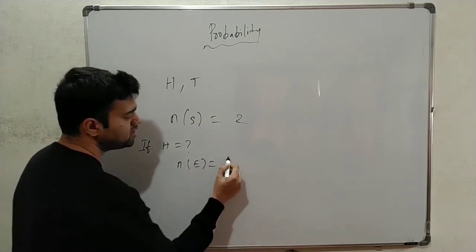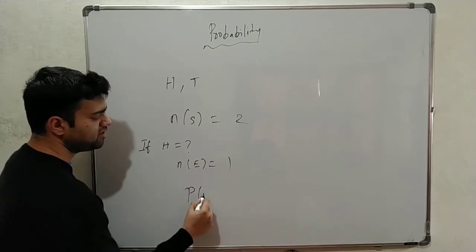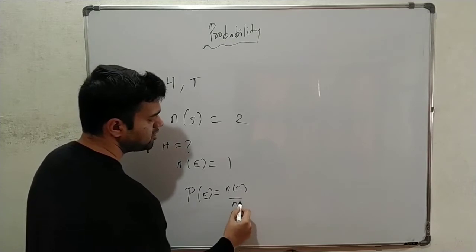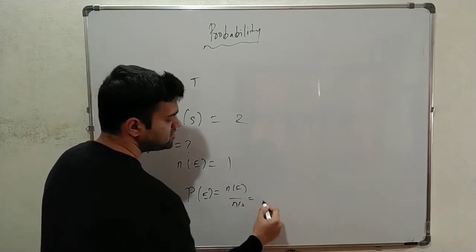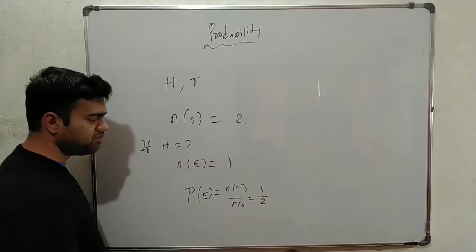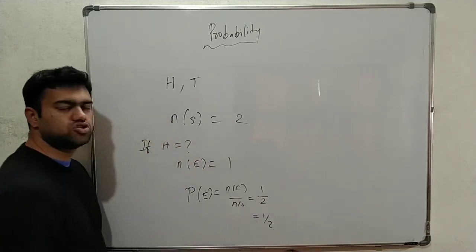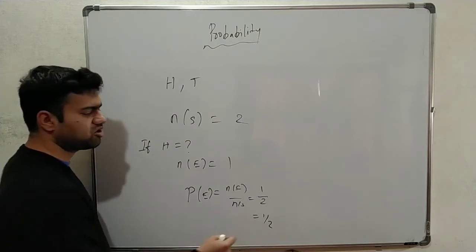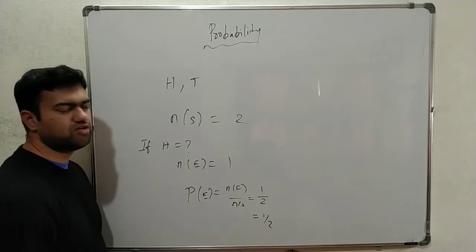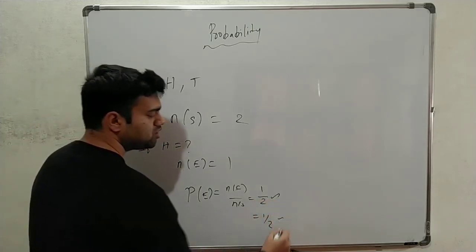The event is one chance. The probability of the event is n(E) by n(S). There are only two possibilities — head or tail. Tail point is 1 by 2. So there are 50% chances. It is 50-50. This is 1 by 2 and 1 by 2.